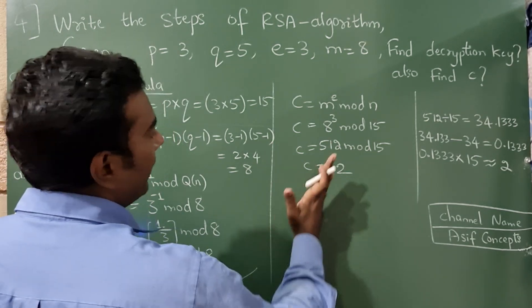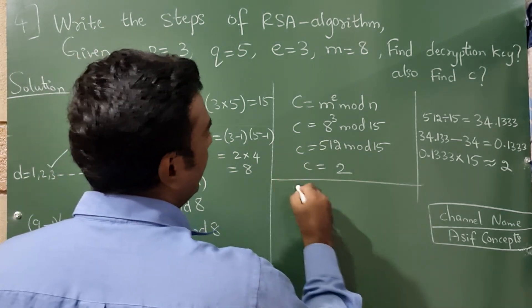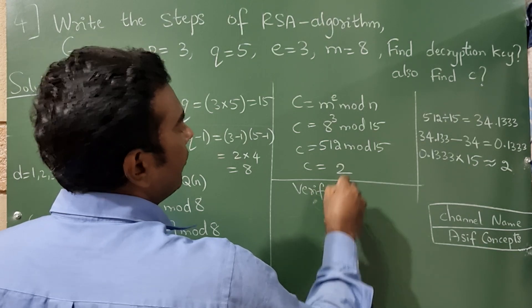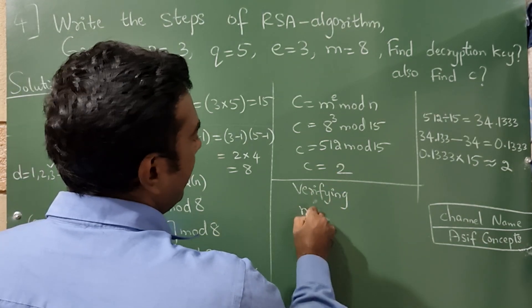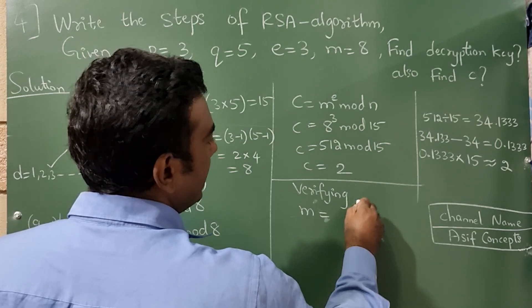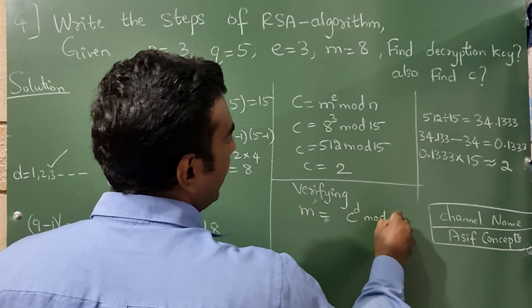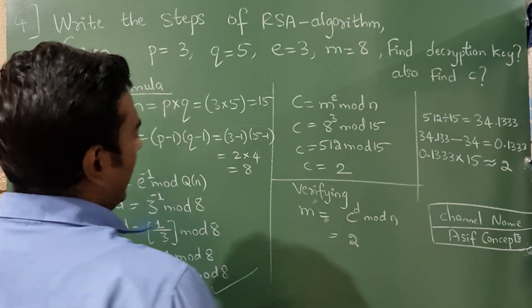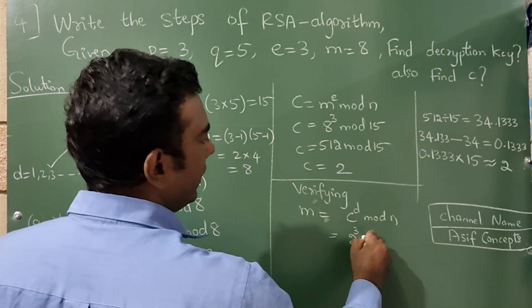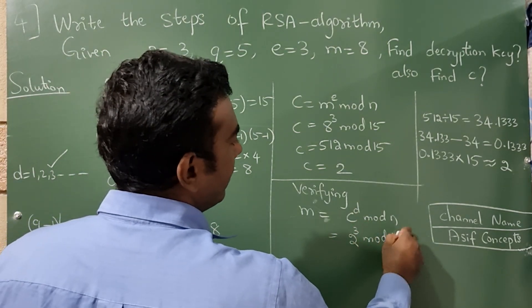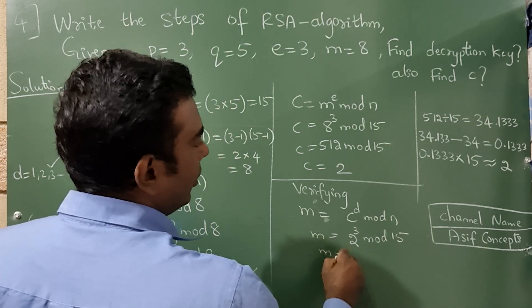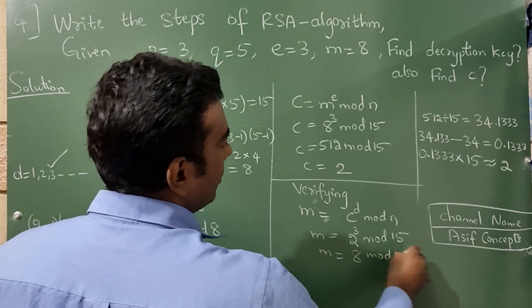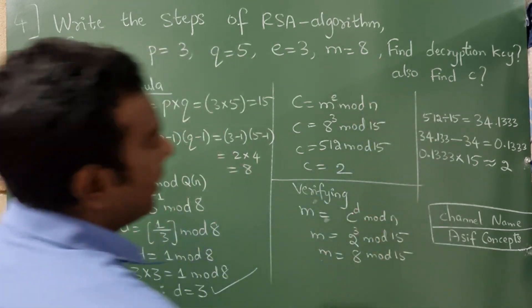Let us check by verifying whether the answer is correct or no. For this, there is one more formula that is M is equal to C raise to D mod N. Now what did we get C value? It is 2 and D value from here it is 3 mod 15. So 2 raise to 3 is 8. So M value has become 8. It means it is correct.